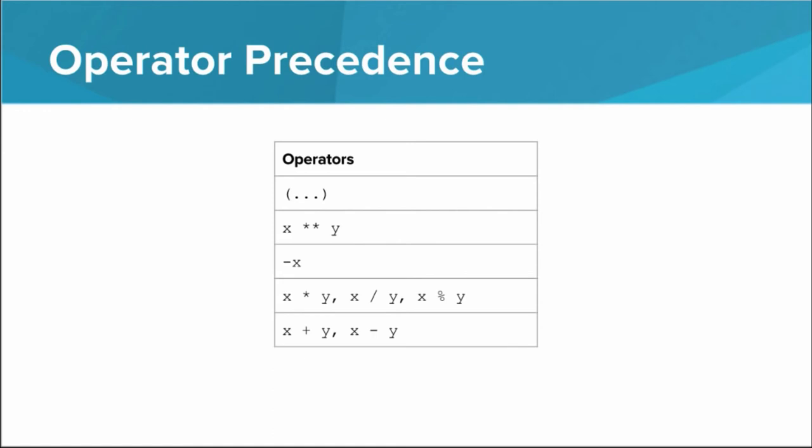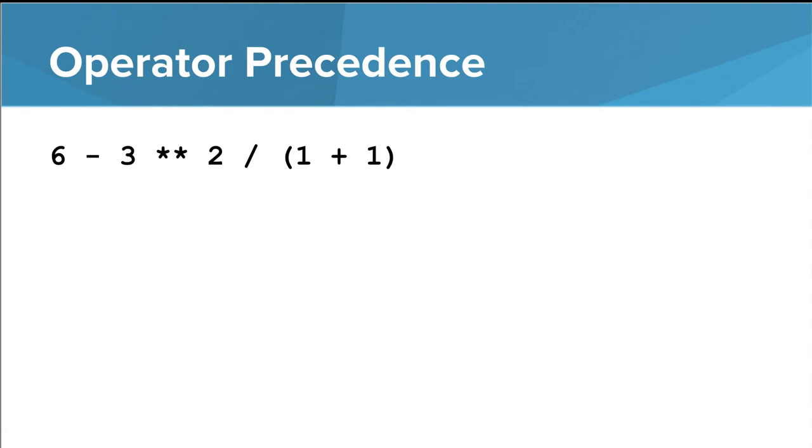This is a lot of information, but hopefully it'll make more sense when we go through an example. So here's an expression, and let's see how Python would evaluate it if it were found somewhere in a program. Remember, we always start with everything in parentheses, and in this case, the only expression in parentheses is just one plus one, so that's pretty easy to evaluate.